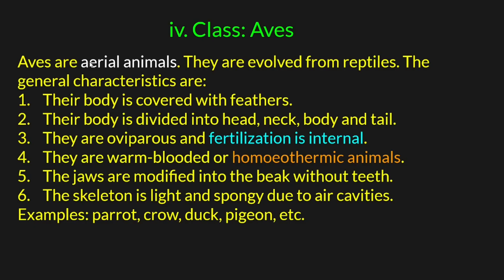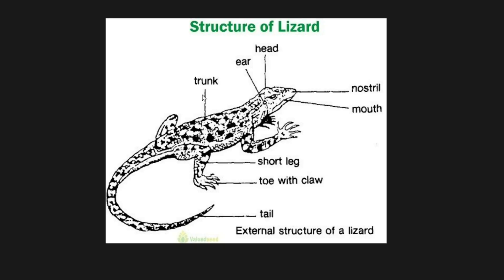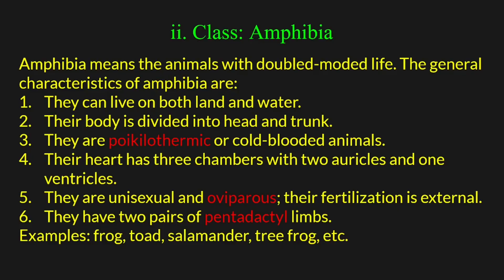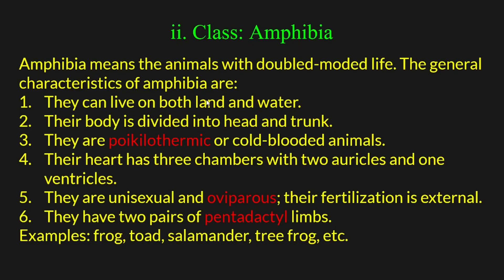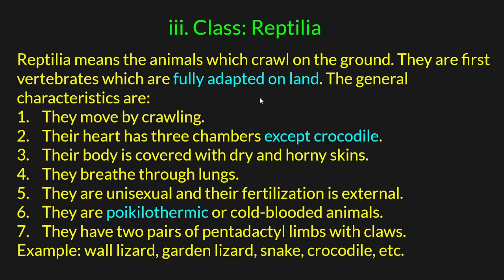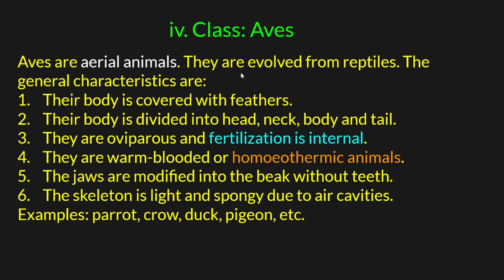Next is class Aves. Aves are aerial animals. They evolved from reptiles — Archaeopteryx is the connecting link between reptiles and Aves, which we study in the evolution chapter. The evolution sequence is: Pisces (water) → Amphibia (water and land) → Reptilia (fully on land) → Aves (aerial).